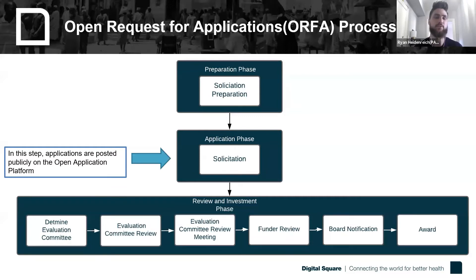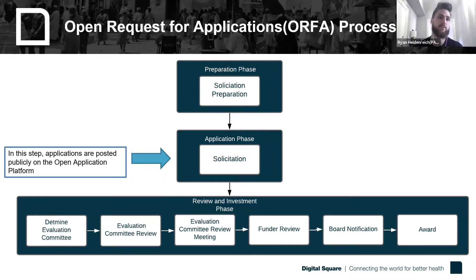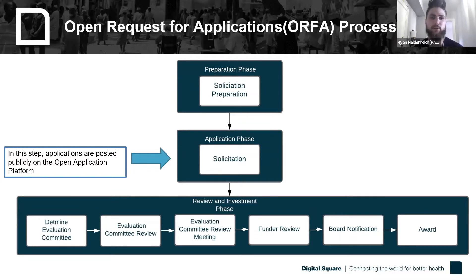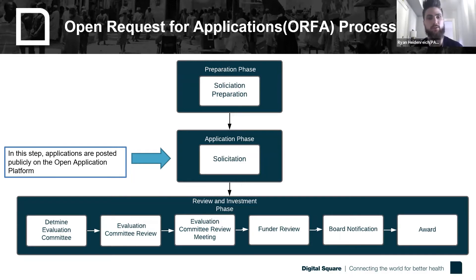Now our newest process: the Open Request for Applications, or ORFA. This is essentially the same process as the RFA, with one key difference: in the solicitation phase, instead of emailing applications, they are posted publicly to the open application platform, similar to the OAP process. But unlike the OAP, there is no concept note phase and multiple levels of review — it's just the full application submitted to the open application platform. Digital Square is always finding new ways to be transparent and invite community collaboration, and the ORFA is one approach to offer a more public RFA process.